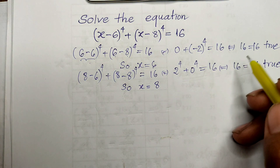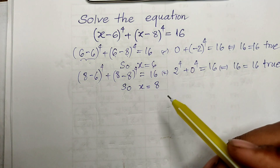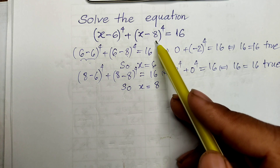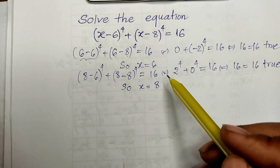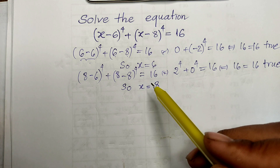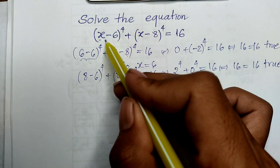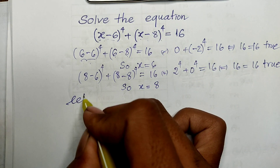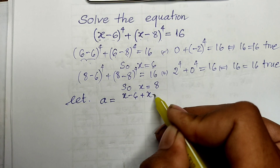So we have two solutions that are integer numbers: h equals 6 and h equals 8. But this equation is degree four, so it must have four solutions. How do we find the other two solutions? Now let me look at h minus 6 and h minus 8 more carefully.